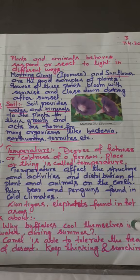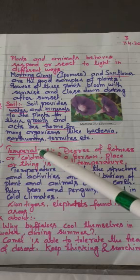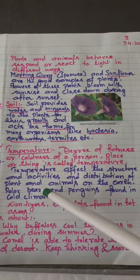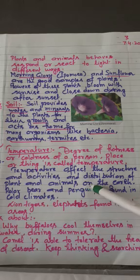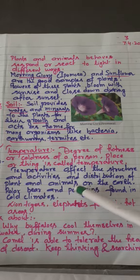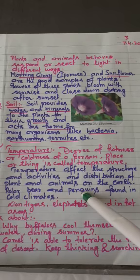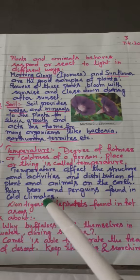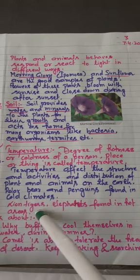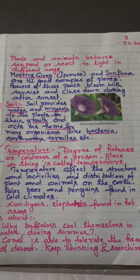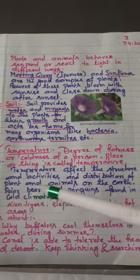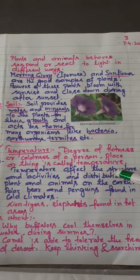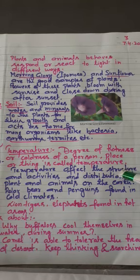What is the meaning of that? This temperature is responsible for the distribution of plants and animals on the earth. For example, polar bears and penguins are found mostly in cold climates, while the lion, tiger, and elephants are found in hot areas. Dear student, the structure of these animals is also modified according to the need of the area or the temperature.